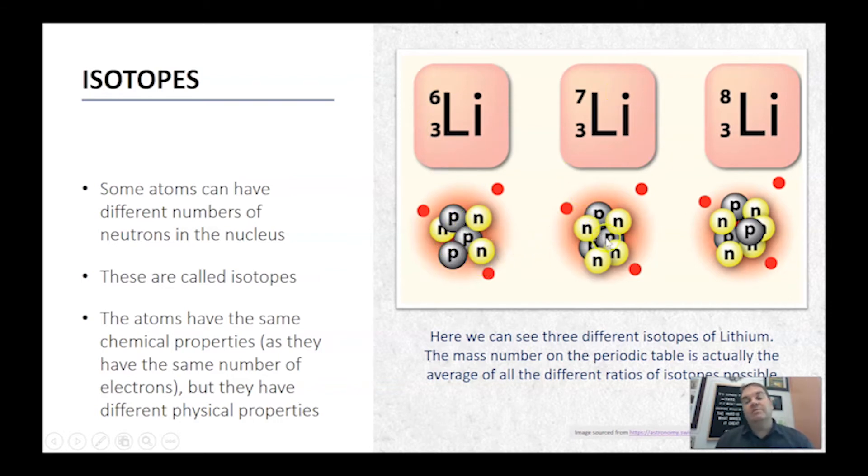But over here in this isotope of lithium, we've still got an atomic number of three. So we've still got three protons. But now the mass number is seven. So seven take three gives us four neutrons there. Here similarly in lithium-8, we now have five neutrons, still three protons. The same atomic number, which means same number of protons, but different number of neutrons.